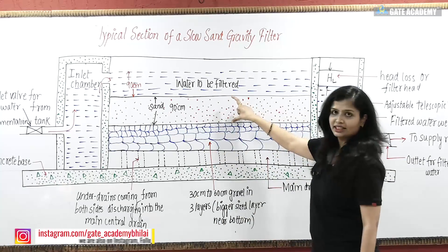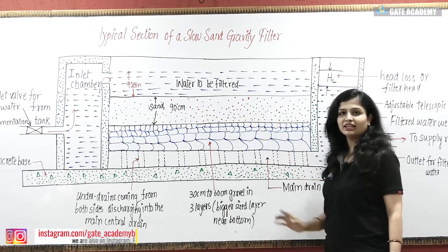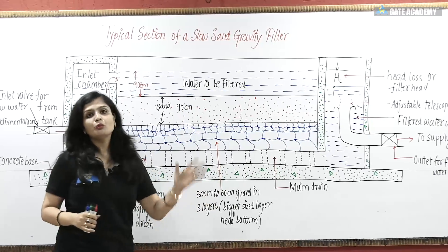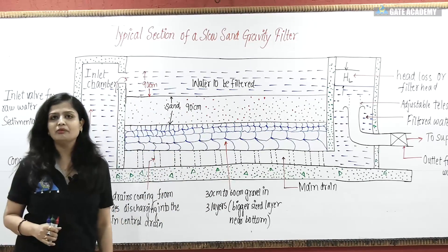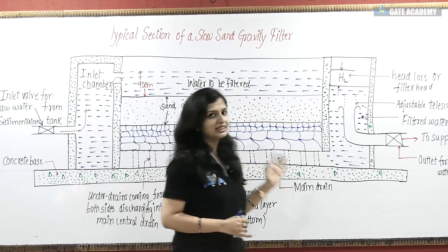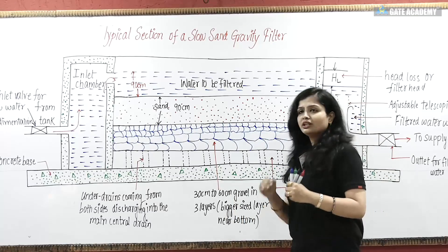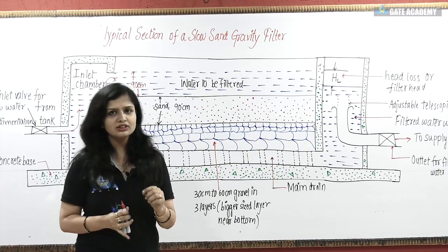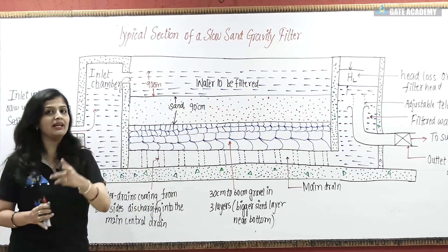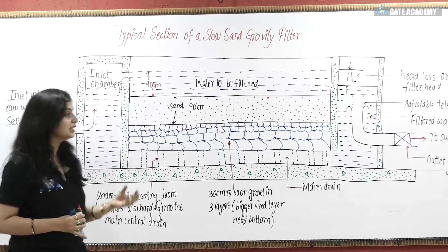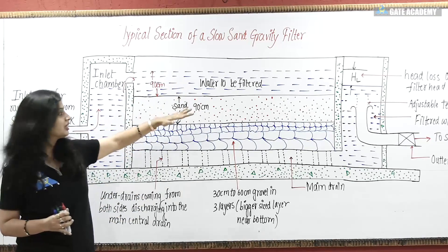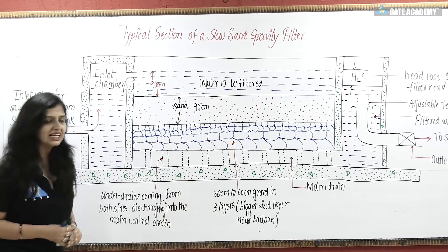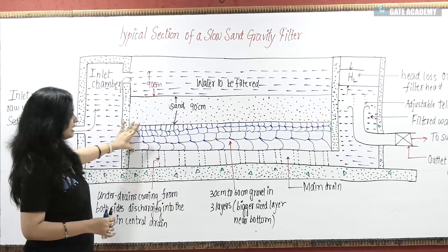Now let's talk about the filter media material. This sand layer has a depth of 90 to 120 cm. We will place the sand in two or three layers, but the sizes vary. The finer size sand particles are placed in the topmost layer, which relates to mechanical straining — larger voids remove impurities. So the finer sand particles are in the topmost layer, then medium size, then coarser particles of sand.